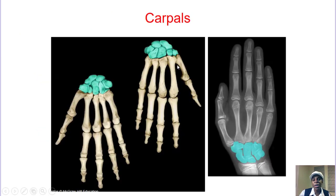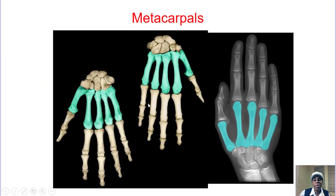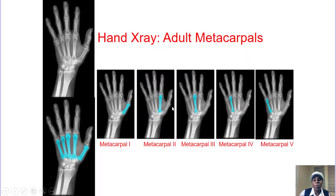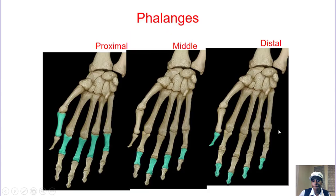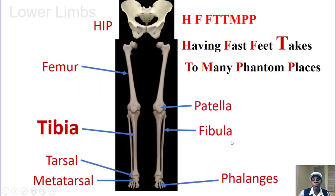Then the metacarpals — we have five of them: metacarpal one through five. Then the phalanges: proximal (closest to the metacarpal), middle (the next one), and distal (the very tip of your fingers).